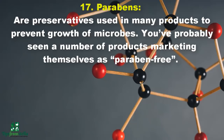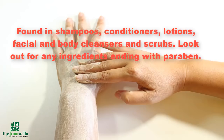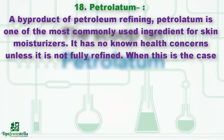Number seventeen: parabens. These are preservatives used in many products to prevent growth of microbes. You have probably seen products marketing themselves as paraben-free. These chemicals mimic estrogen and lead to hormone imbalance, infertility, slowed growth, and developmental disorders in children. Found in shampoos, conditioners, lotions, facial and body cleansers, and scrubs. Look out for any ingredient ending with paraben.